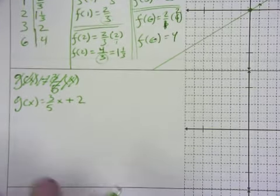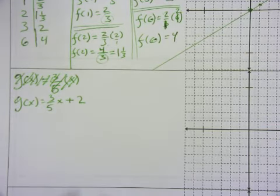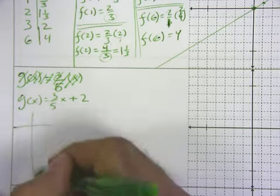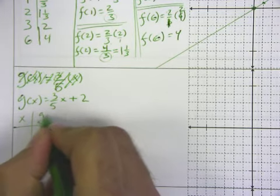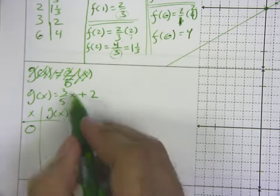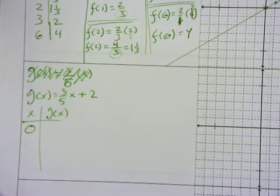So from our previous notes, we again want to be strategic about what values we pick so we get nice whole number values for my table here. So g(x) - so we know 0 will obliterate the fraction. 3 over 5 times 0 will not be a fraction, we'll be able to add 2 to that, no problem.